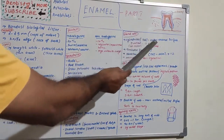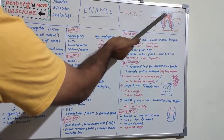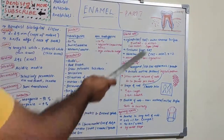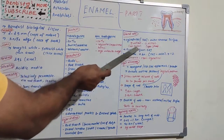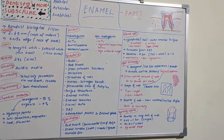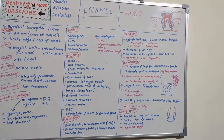The first structure is enamel rods, which are cylindrical in shape. They start from the dentino-enamel junction (DEJ) towards the outer enamel surface. The number is approximately 5 million in the lower lateral incisor and around 12 million in upper molars. The course of enamel rods is tortuous — they do not go in a straight line from the DEJ to the outer surface.